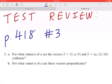Hi everyone, let's take a look at number 3 on page 418. For what values of a are the vectors x = (3, a, 9) and vector y = (a, 12, 18) collinear? For what values of a are these vectors perpendicular?